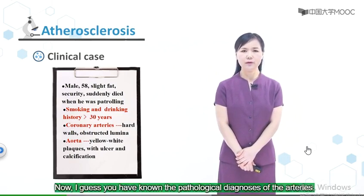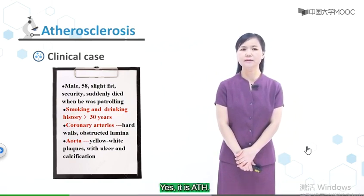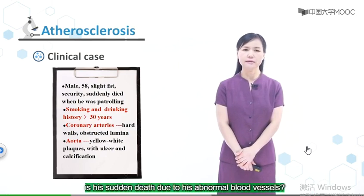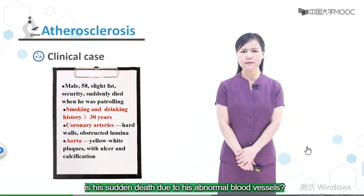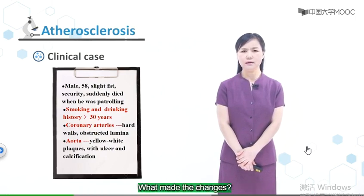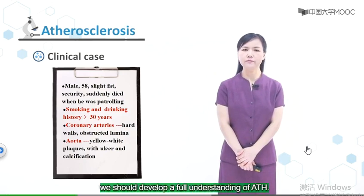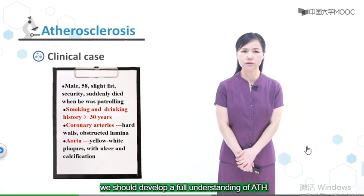I believe you now know the pathological diagnosis of the arteries — yes, it's ATH. Then you may ask: is his sudden death due to his abnormal blood vessels? What made the changes? Was it alcohol or cigarettes? How did they cause it? To answer these questions, we should develop a full understanding of ATH.